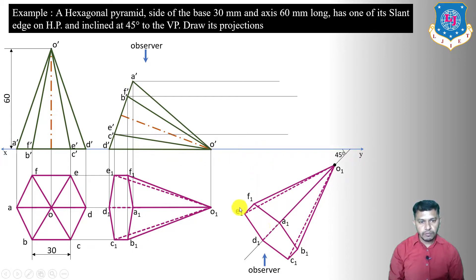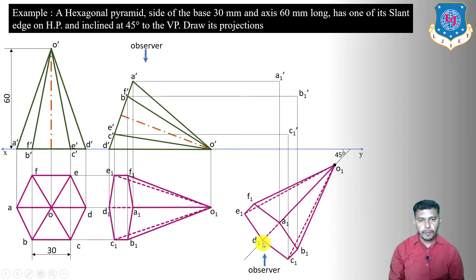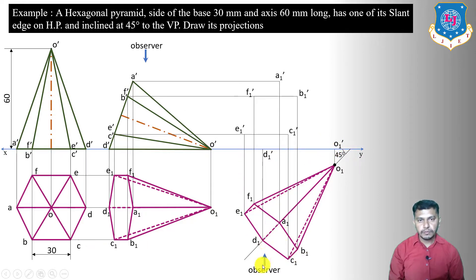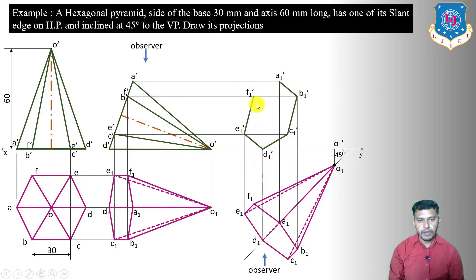Draw projections from the third-stage figure to get A1', B1', C1', D1', E1', F1', and O1'. The base is nearer to the observer, so in the front view the base is visible. Connect A1'–B1', B1'–C1', C1'–D1', D1'–E1', E1'–F1', F1'–A1' as visible outlines.